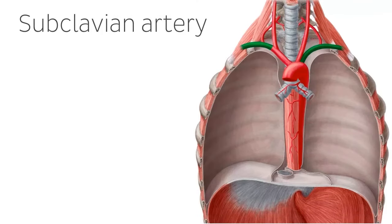In our image on the right, you can see the left and right subclavian arteries highlighted in green. The subclavian artery is the first major artery to supply the upper limb, coming off almost directly from the aortic arch. The right subclavian artery arises from the brachiocephalic artery, while the left subclavian artery arises directly from the aortic arch.